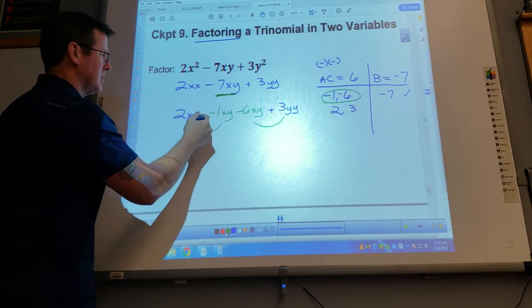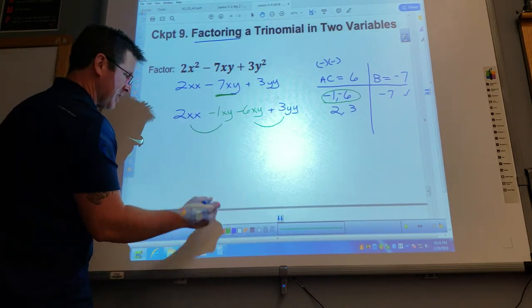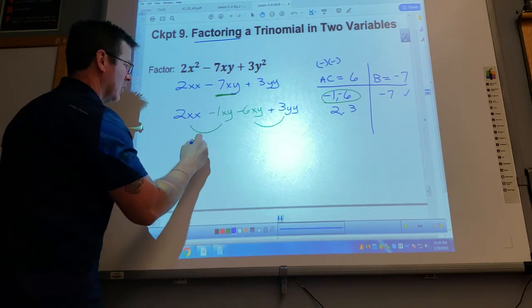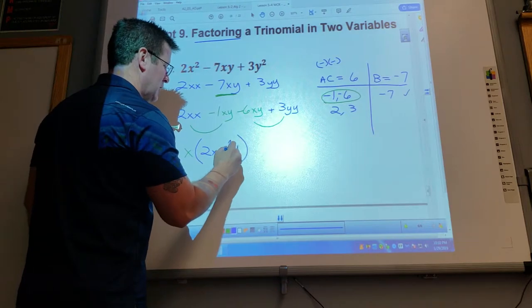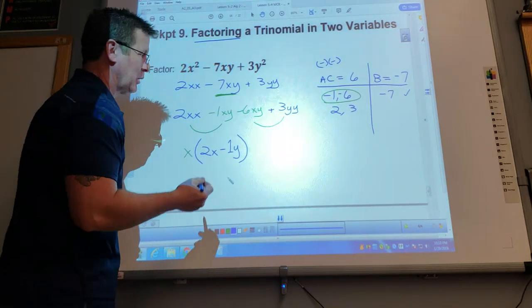Just in this case, an X. So guess what comes outside? An X. What's left over? 2X and 1Y. And again, you don't have to waste your ink writing that one, but I've got plenty of ink.